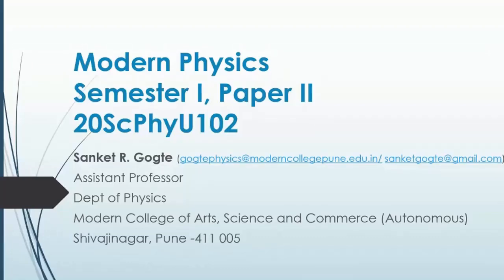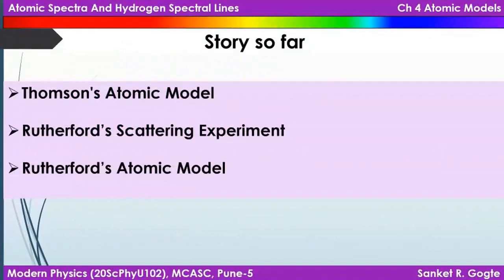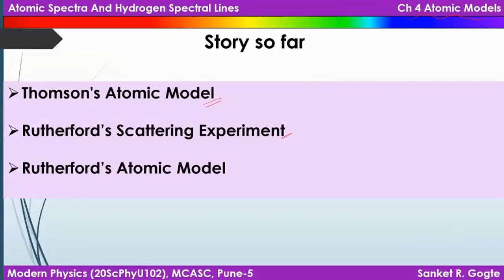Welcome to this online lecture of modern physics. We have been discussing atomic models — briefly Thompson's atomic model, the plum pudding model. Then to test that model, Rutherford and his team performed a scattering experiment with alpha particles scattered from gold foil. We discussed the experimental setup and outcomes in detail, and the outcomes made it clear that Thompson's atomic model cannot be correct. To account for the experimental results, Rutherford himself proposed an atomic model.